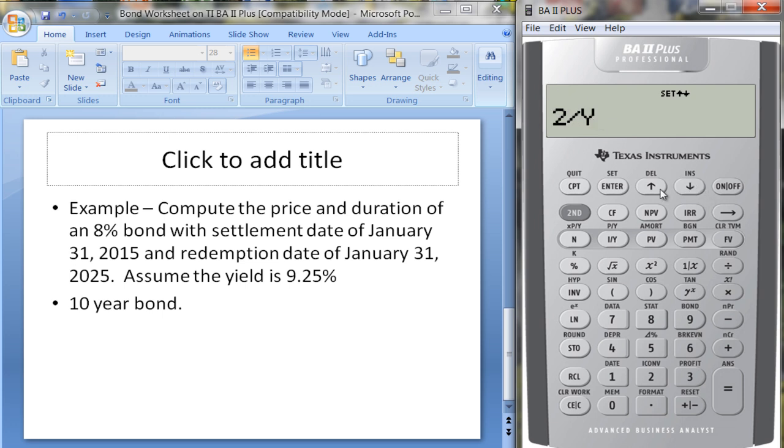We'll stay with the actual day count, two coupons per year. The yield is 9.25 and we want to compute the price.